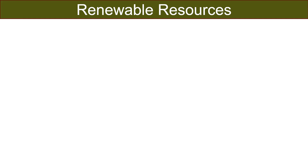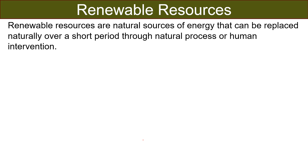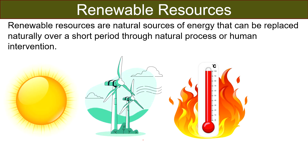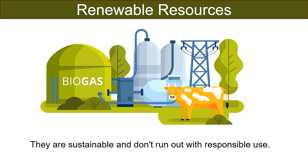Renewable resources are natural sources of energy that can be replaced naturally over a short period, either through natural process or human intervention. Examples include sunlight, wind, geothermal heat, water, etc. They are sustainable and don't run out with responsible use, so these can be used over and over again as they can be revived naturally.